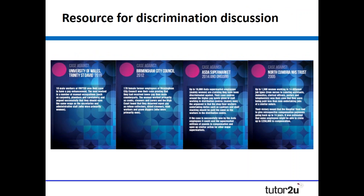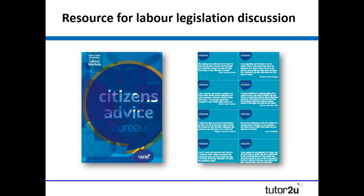A couple of resources for you. The first is a set of case studies of where discrimination has appeared to have taken place in the UK, where one group of workers has taken an employer to court — in many cases proven correct, and in some cases proven incorrect. A series of about 16 different case studies for students to have a look at, giving them evidence and ammunition when making their case about wage discrimination. The second resource is called Citizens Advice Bureau, where students are given information about employment laws in the UK and then act as if they were working at Citizens Advice Bureau — somebody comes in with a particular scenario and they need to work out which law is being impacted upon.